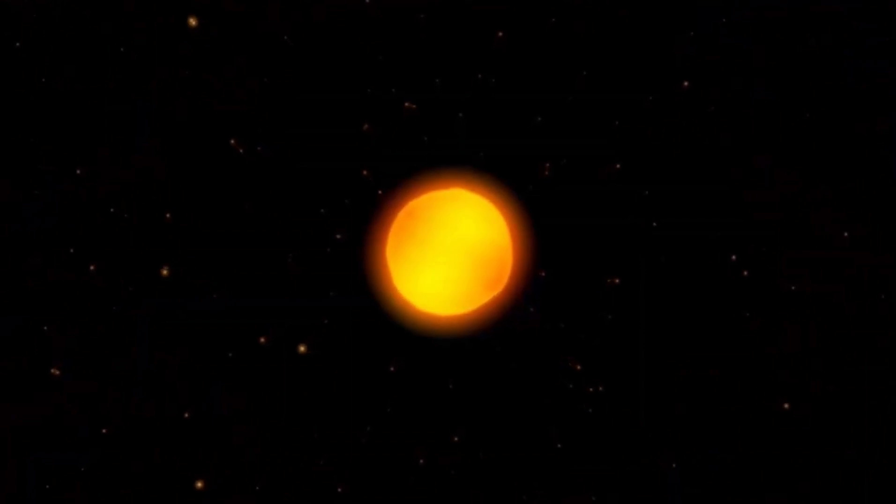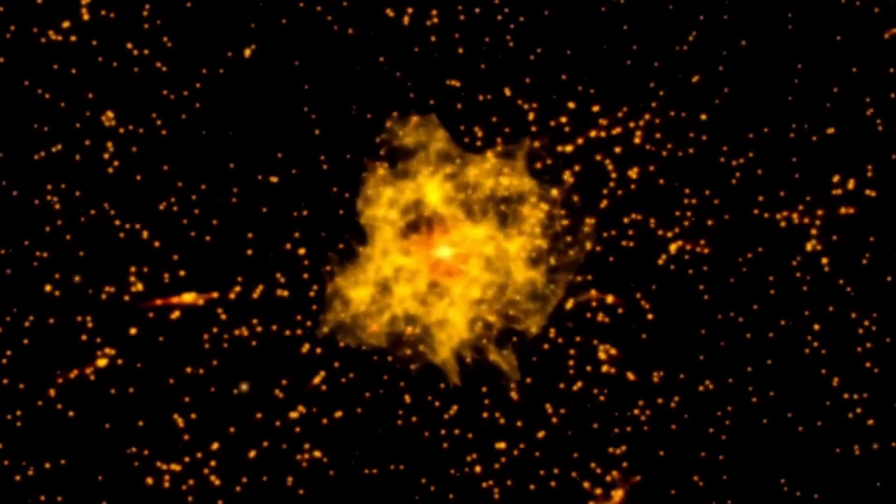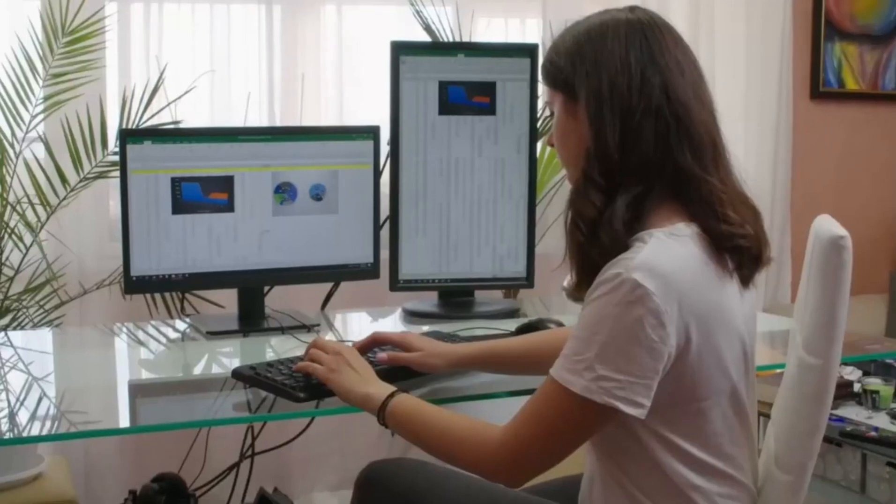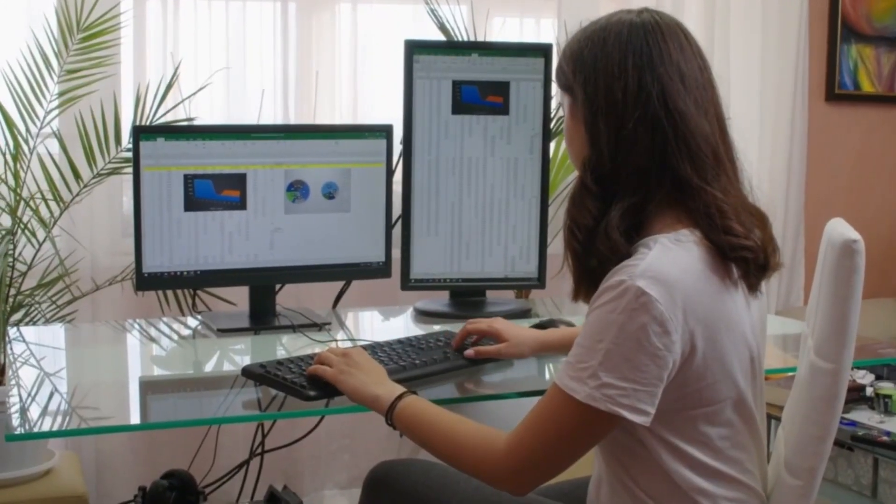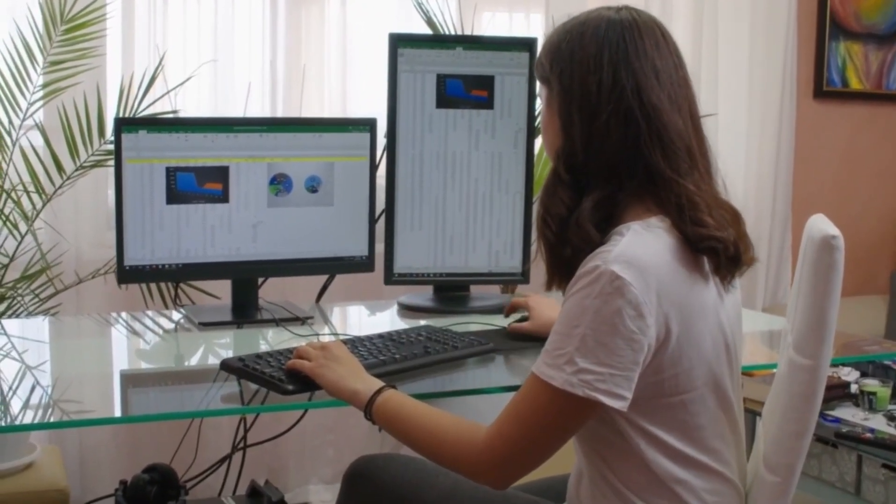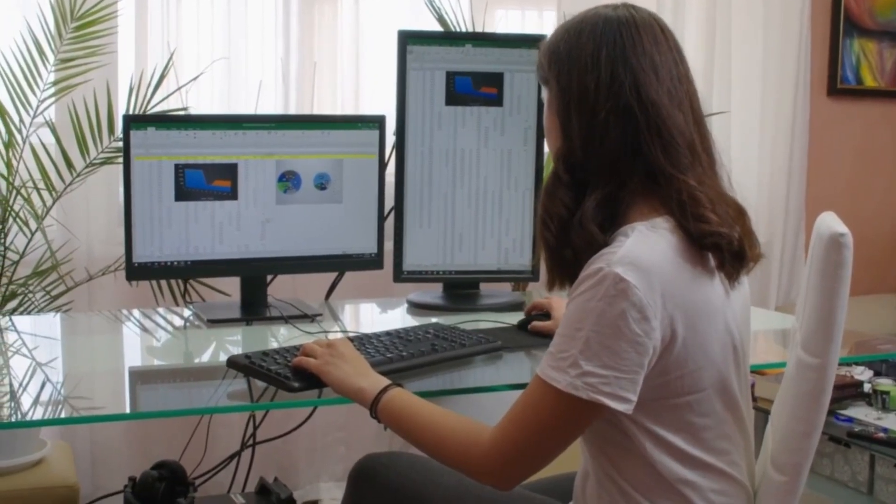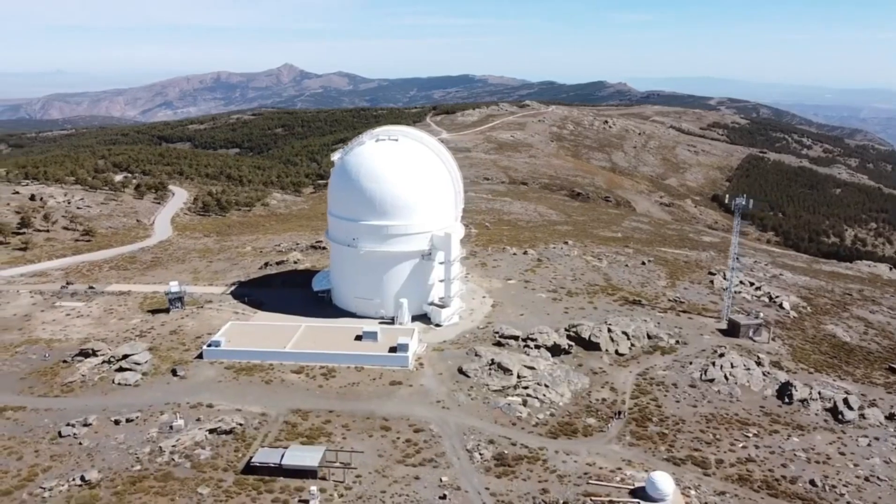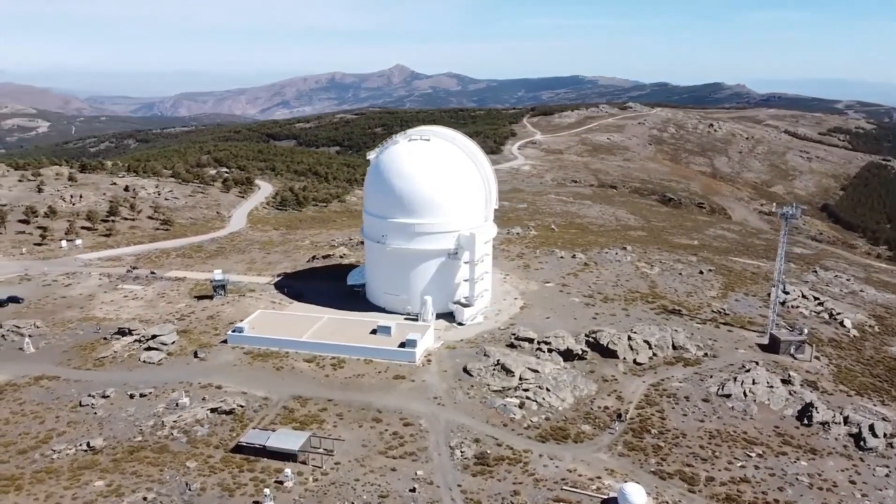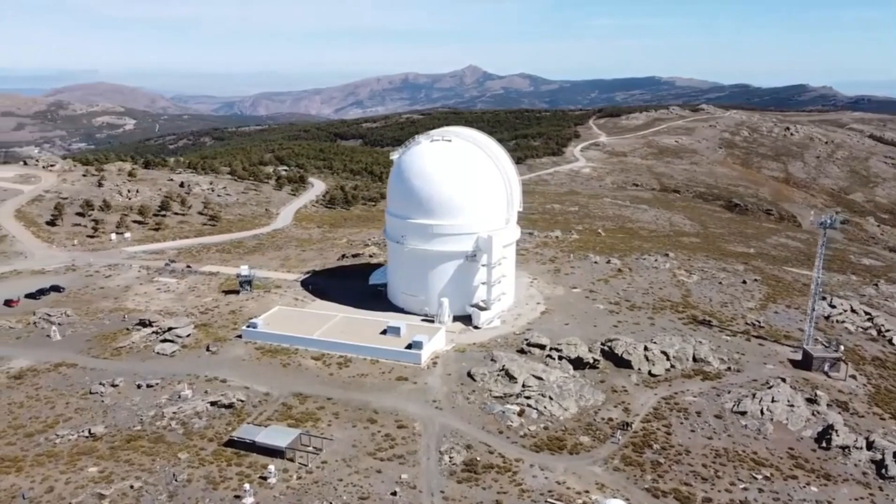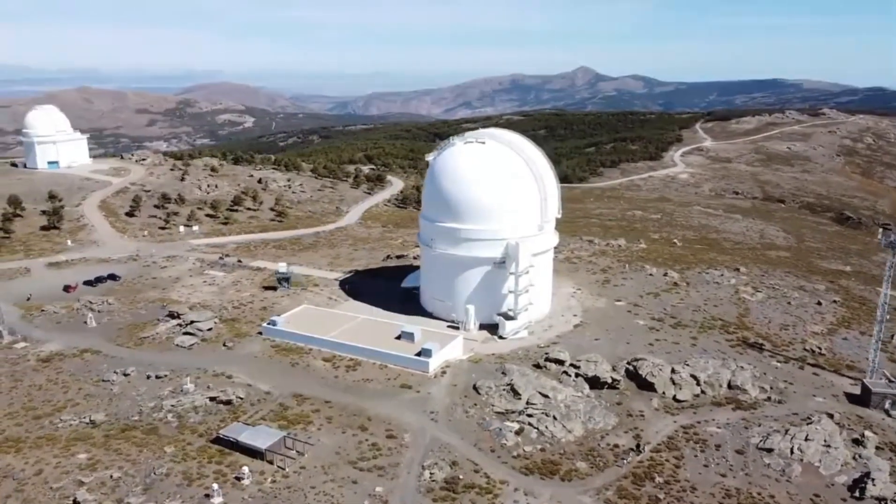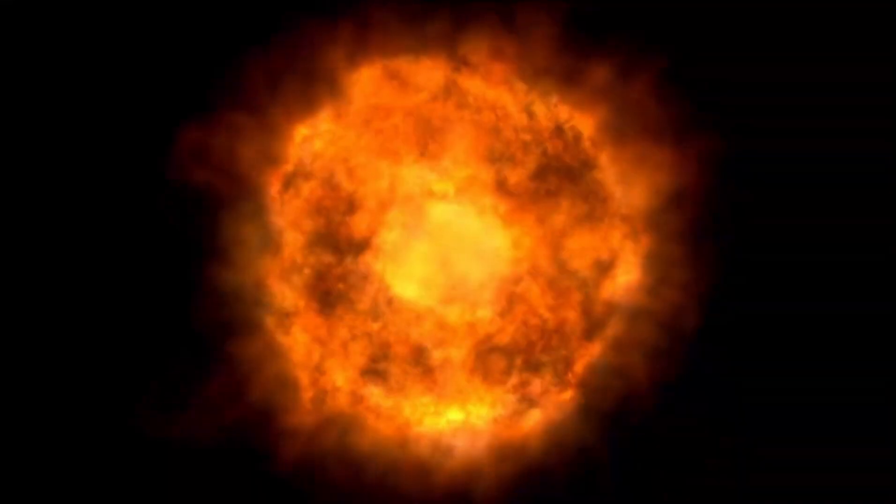The unfolding of Betelgeuse's celestial drama was closely monitored by Andrea Dupree, associate director of the Center for Astrophysics at Harvard-Smithsonian, and her team. They utilized Hubble to analyze the behemoth star, a part of a three-year study to monitor variations in Betelgeuse's outer atmosphere. These observations offered a unique insight into the dynamics of a variable star like Betelgeuse, which regularly expands and contracts, causing fluctuations in brightness. Hubble's sensitivity to ultraviolet light allowed the researchers to probe the layers above the star's surface, which were heated partly by the star's turbulent convection cells.